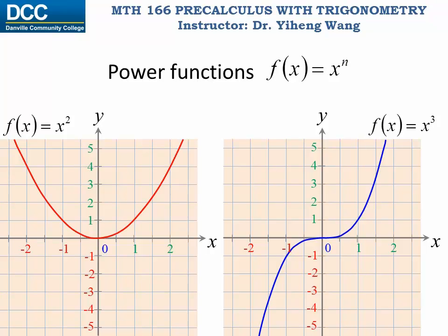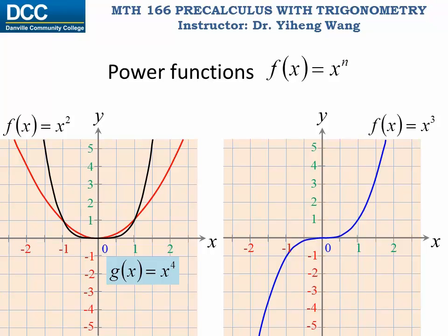For power functions of a higher degree, if the degree is an even number — for example, g(x) = x to the fourth power — this is what the graph looks like. Comparing it to the squaring function f(x) = x squared, you will notice they have a similar U shape and share the same special points: (-1, 1), (0, 0), and (1, 1). However, within the interval from negative one to one, the graph of the higher-degree power function is flatter.